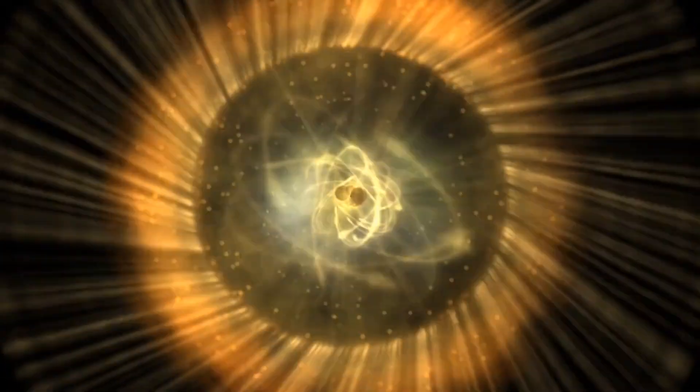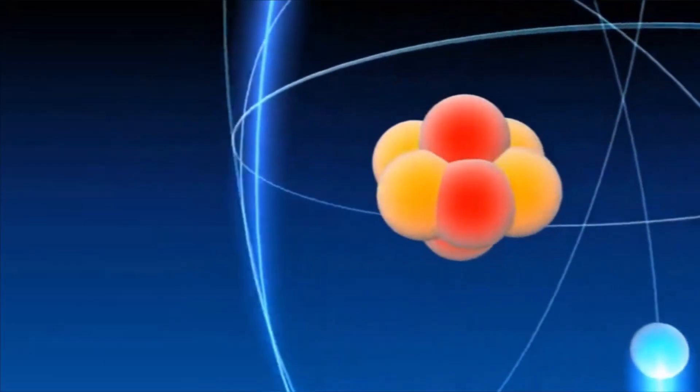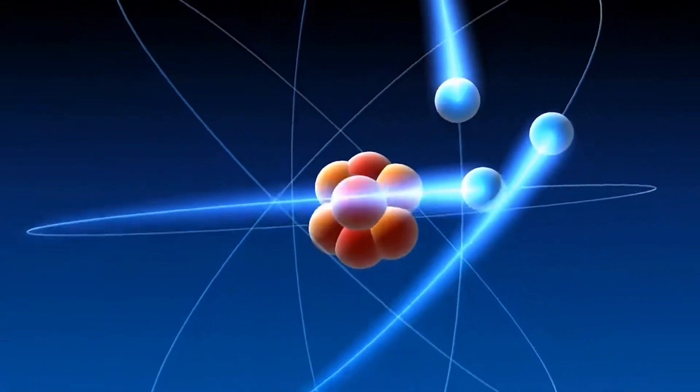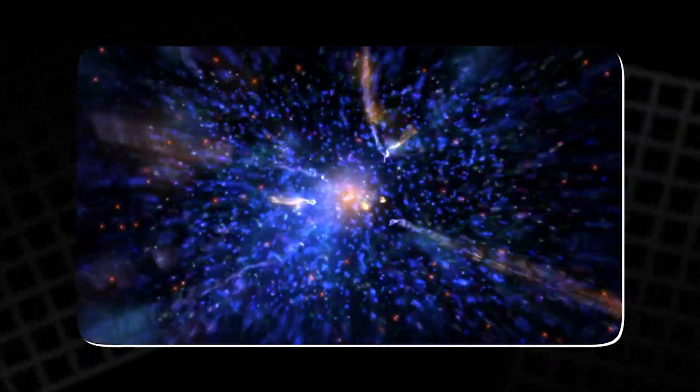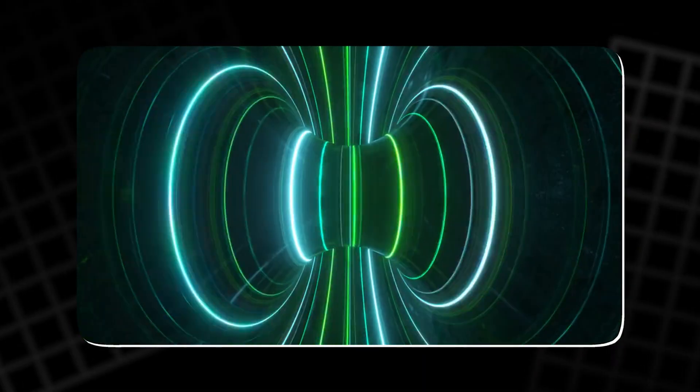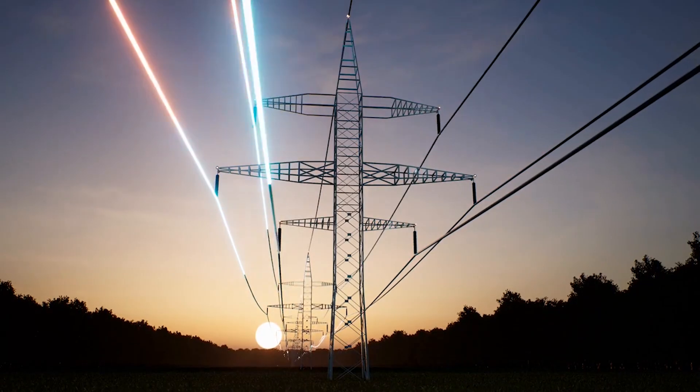Electrons cannot remain in a higher energy state for long, because it is unstable. They soon fall back down to their original orbital, releasing the absorbed energy in the form of light particles known as photons. This is the fundamental reason gases glow when exposed to electromagnetic fields or electrical currents.